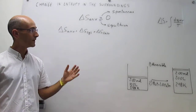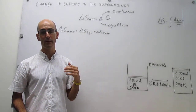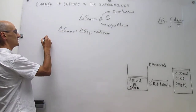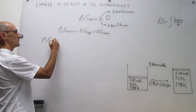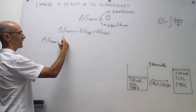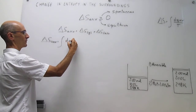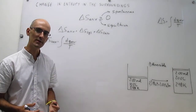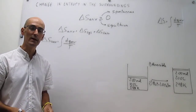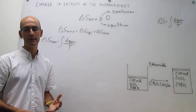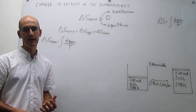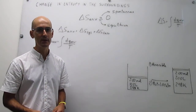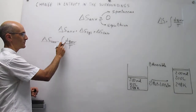To calculate the change in entropy in the surroundings, we can use exactly the same thermodynamic definition as for the system: the change in entropy in the surroundings is the integral of dQ reversible over temperature. Because the surroundings are so large, we can always assume that the process will be isothermal in the surroundings. That simplifies the integration a lot, since temperature is constant.